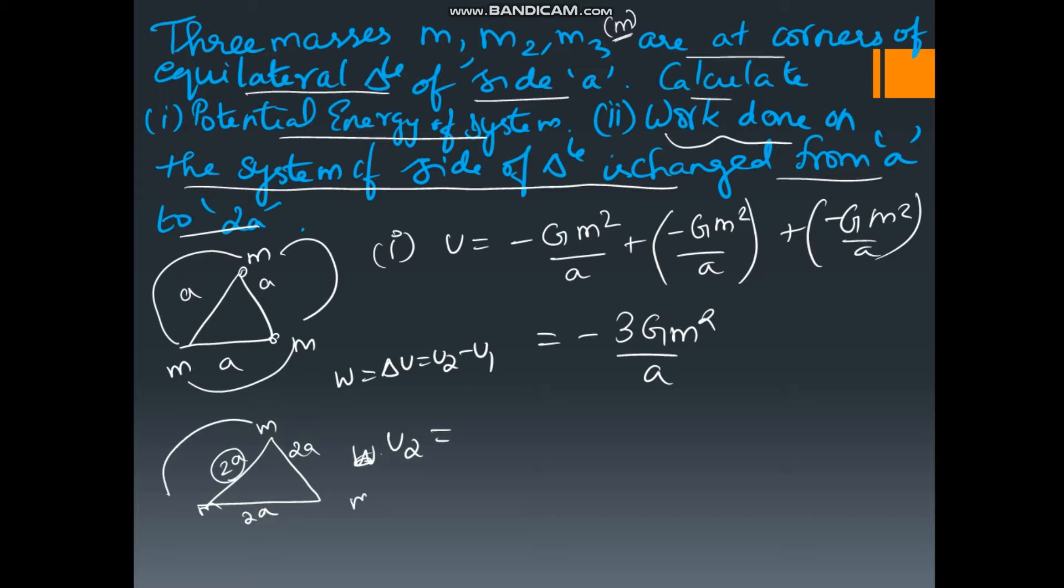These two masses, the formula is minus G M squared by 2A. For these two masses, it is minus G M squared by 2A. For these two masses, it is minus G M squared by 2A. Why we are writing M squared? Because potential formula is G M1 M2 by R. So only M into M is M squared. Which is minus 3 G M squared by 2A.